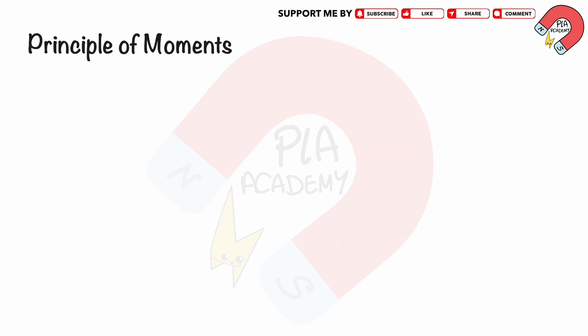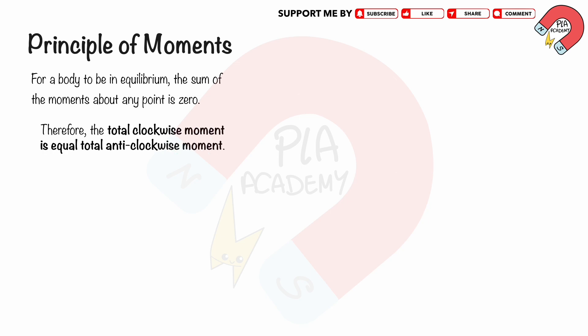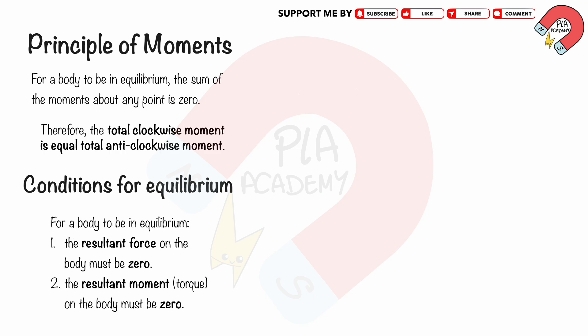Principle of Moments: For a body to be in equilibrium, the sum of the moments about any point is zero. Therefore, the total clockwise moment equals the total anticlockwise moment. Conditions for equilibrium: the resultant force on the body must be zero, and the resultant moment (torque) on the body must be zero.